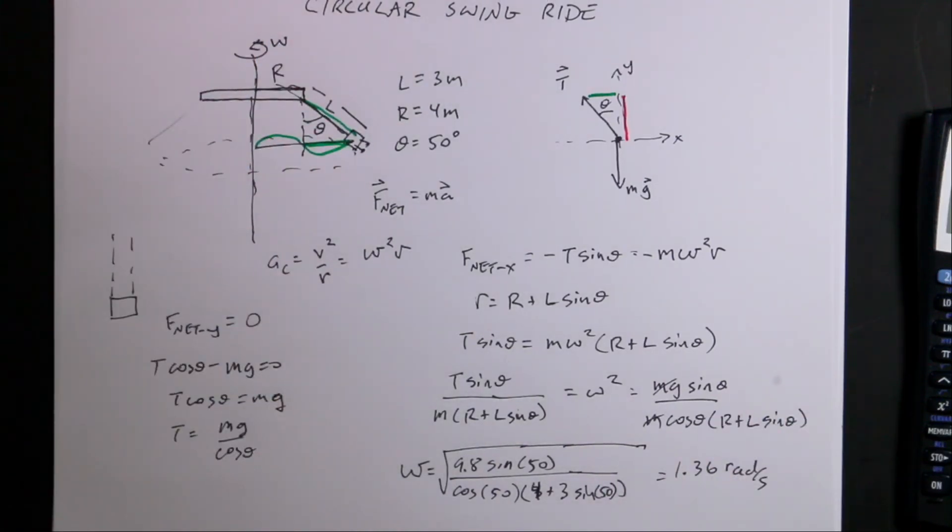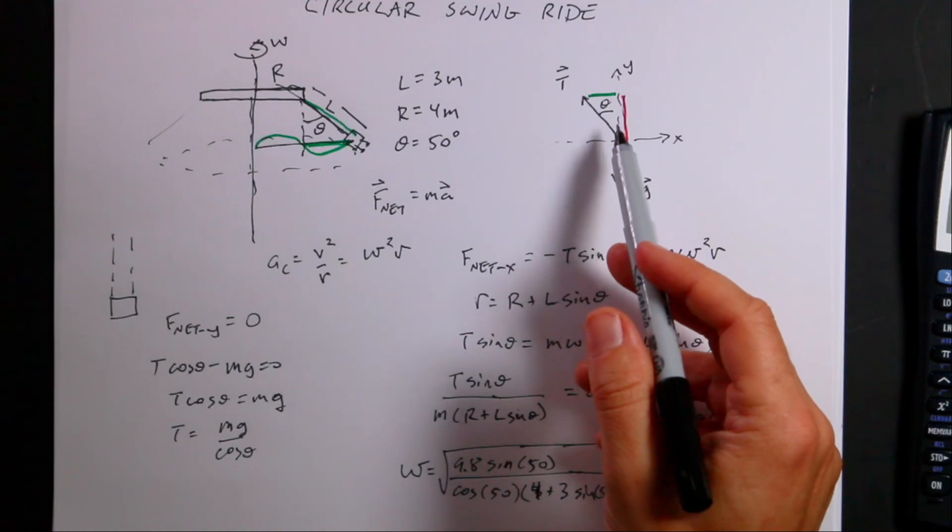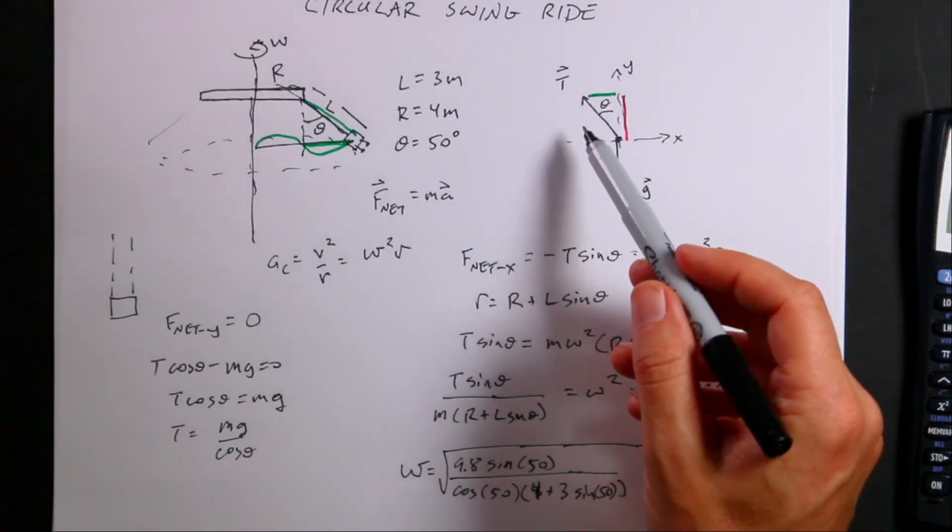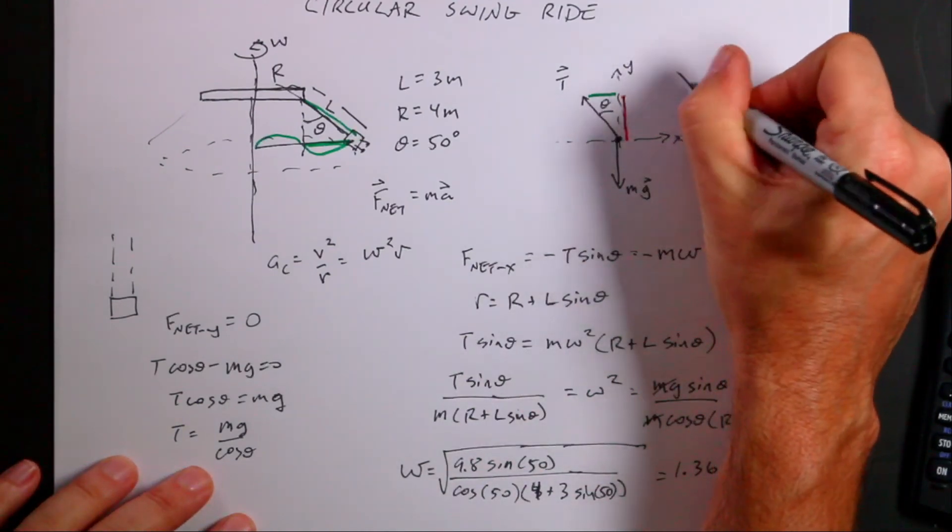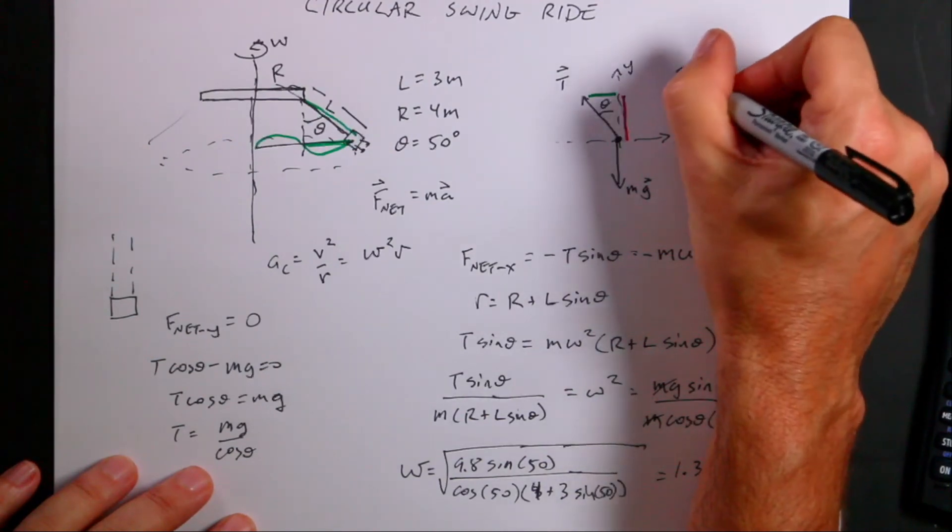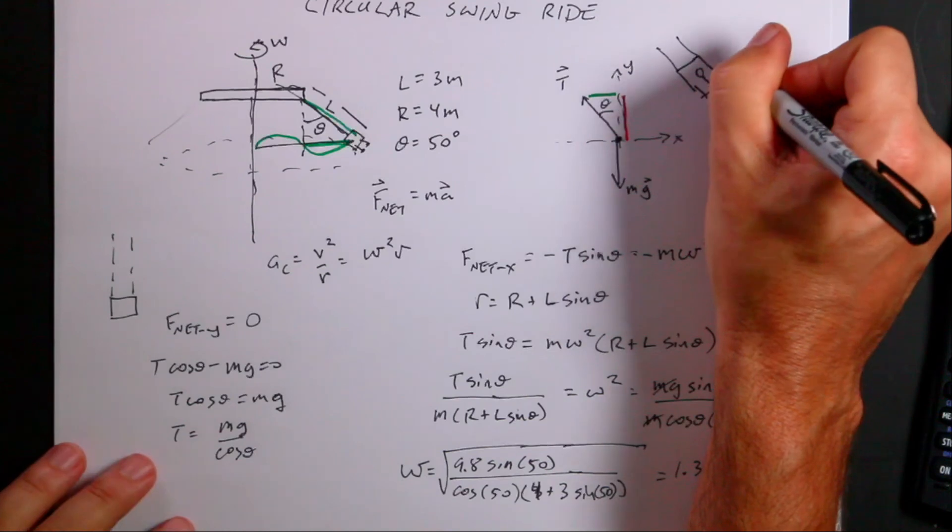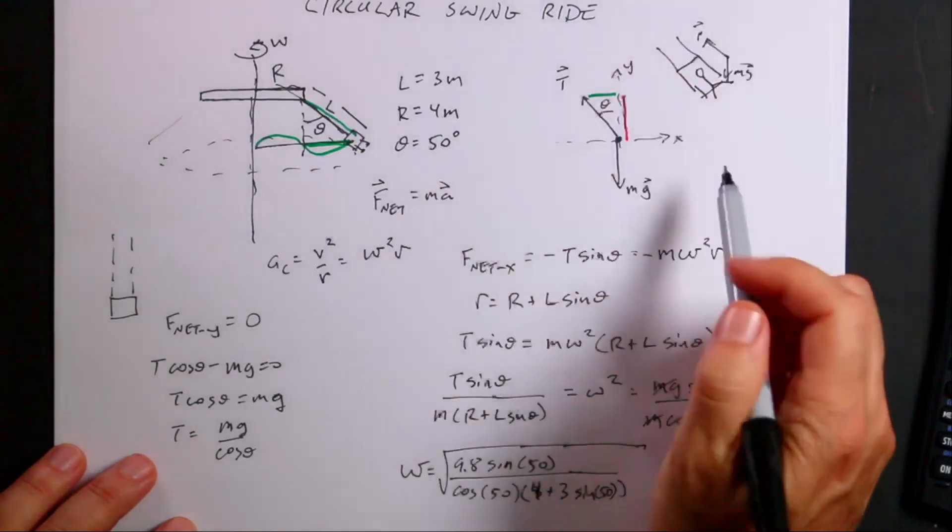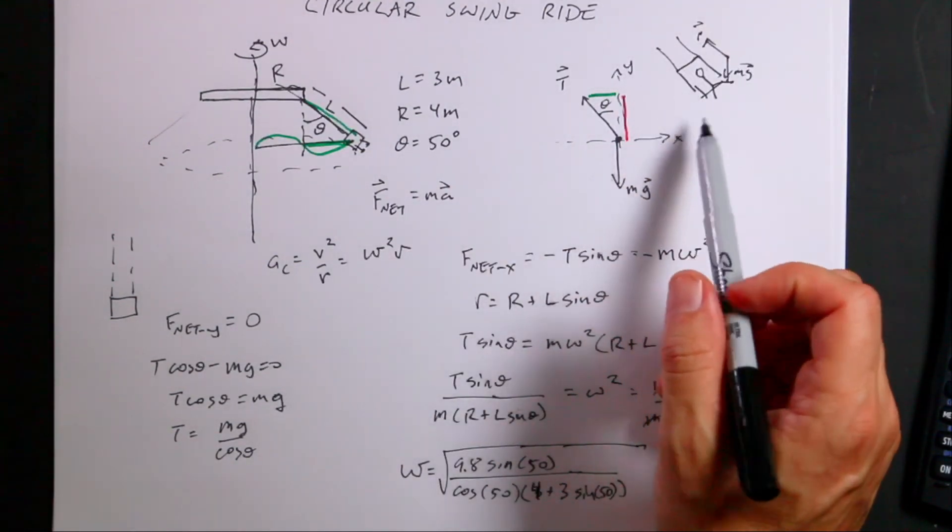One of the other questions was, what is the apparent weight? How many G's would this be? I think the best answer is, what's the magnitude of the tension? Because you don't feel the gravitational force. There's not a normal force per se, but if you look at a person in a chair, there is a normal force. Here's a chair, here's the person sitting down, and there's the tension. For that person, there's a normal force pushing up and gravity pushing down. When we talk about the normal force being the apparent weight, that's the same as the tension here.